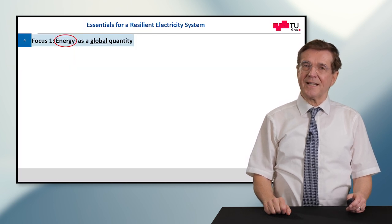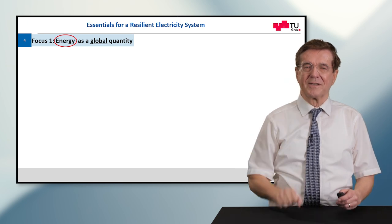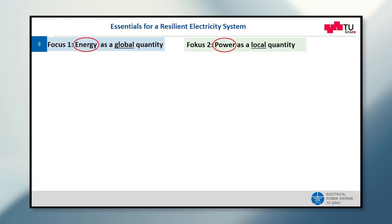To understand the resilient electricity system there are two threads. Thread number one is energy as a global quantity. Thread number two is power as a local quantity.